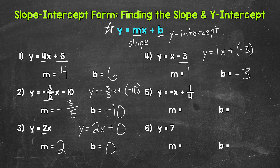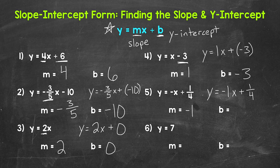Moving on to number five, we have y equals negative x plus one-fourth. Going off of number four, we can think of this as y equals negative 1x plus one-fourth. So our slope is negative 1, and the y-intercept is one-fourth.